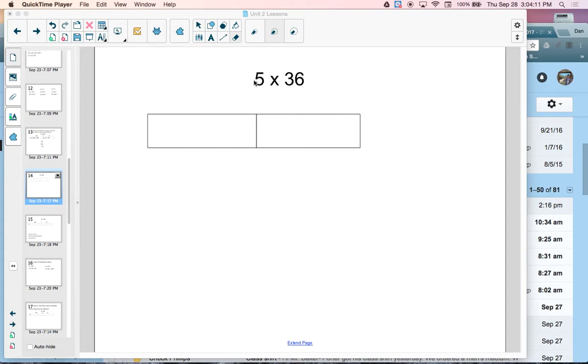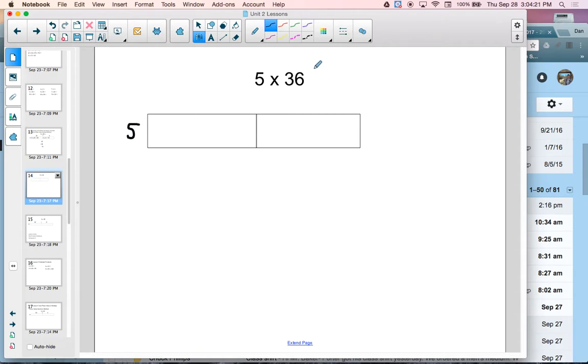Using the place value sections method, I have 5 times 36 here. I'm going to take the 5 and write it over here, and then take 36 and write it in expanded form. So 36 can be written as 30 plus 6.